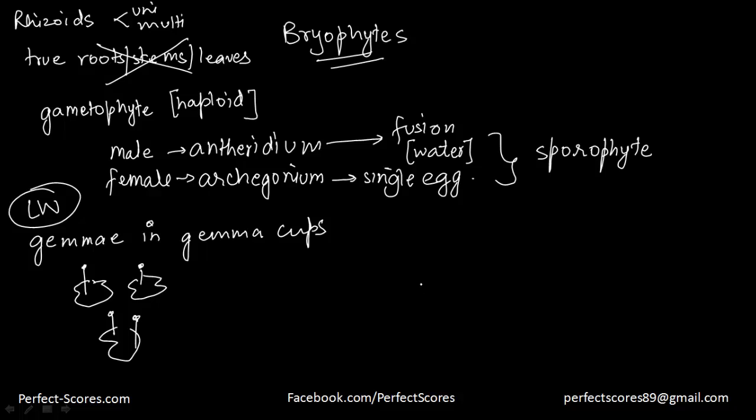The sporophyte has three different areas: the foot, the seta, and the capsule. If you remember the structure, this is the capsule, this is the seta, the stalk-like thing. You have the leaves, you have the axis, and then you have the rhizoids. So we did the sporophyte and the gametophyte. Cell division is through meiosis and spores are produced within the capsule. These spores further germinate to form free-living gametophytes.